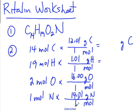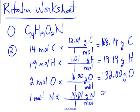14 times 12.01, I have 168.14 grams of carbon. You've got 19.19 grams of hydrogen. 32.00 grams of oxygen. And 14.01 grams of nitrogen. If you add all that up, you've got the molar mass of Ritalin. 233.34 grams is the molar mass of Ritalin.